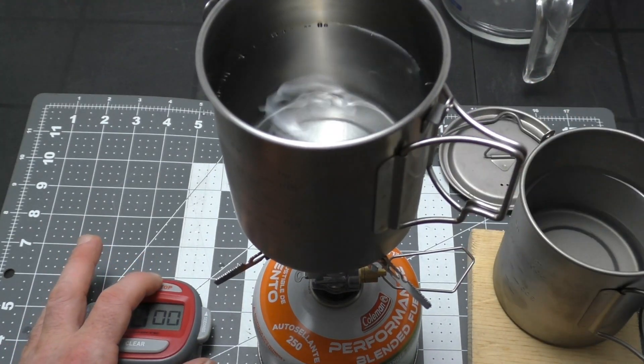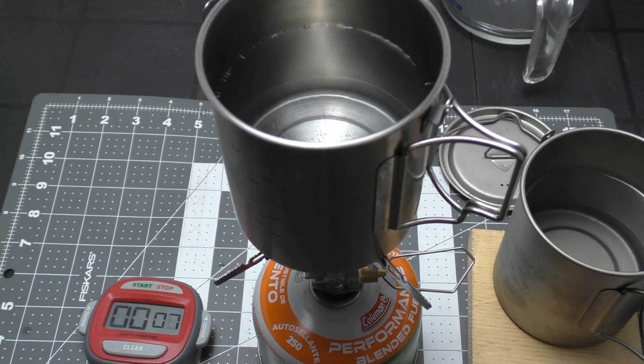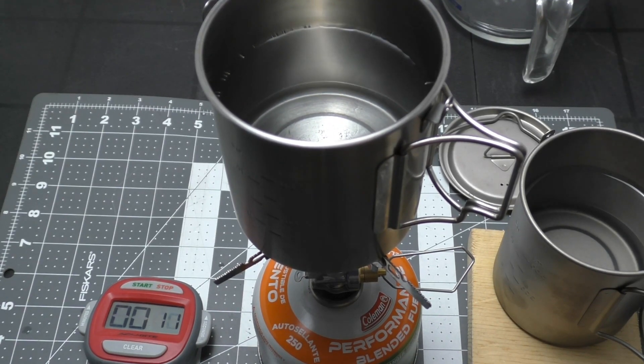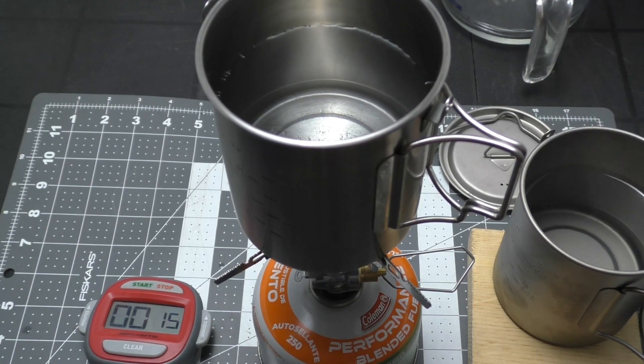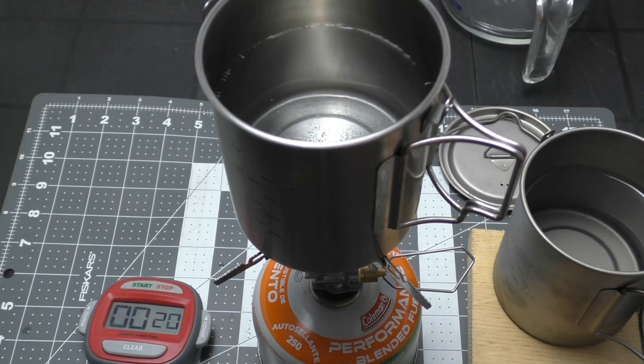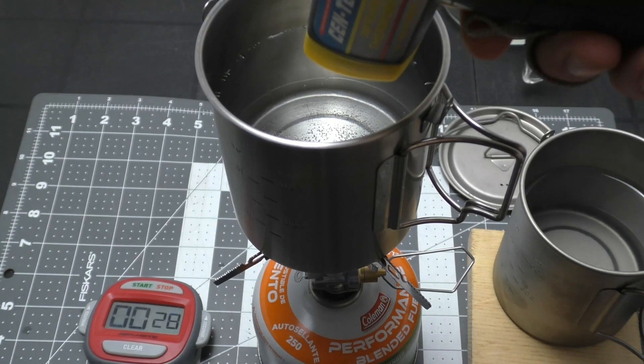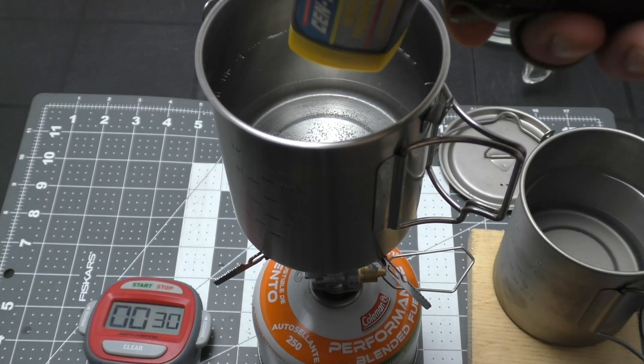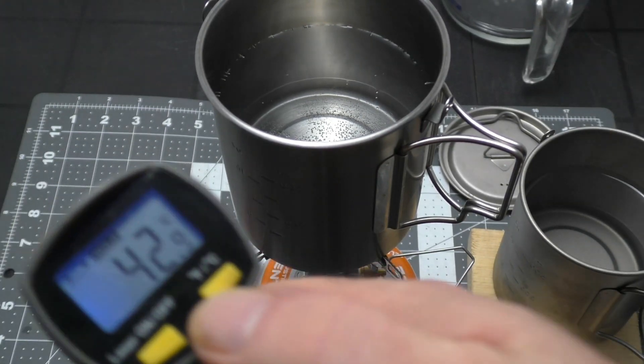We'll see if we get a similar result from the stainless. Man, if it wasn't so hot out I think I'd make some hot chocolate right about now. Alright, approaching 30 seconds and we're already at 109 or 42.9 degrees Celsius.